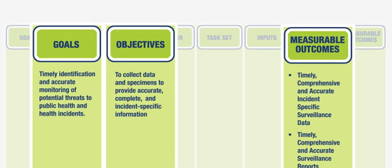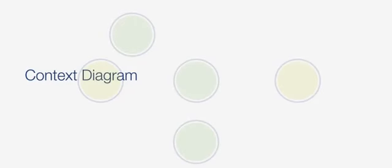Now that we have created the bookends of the process in our matrix, we will turn to the context diagram to help us understand the environment in which the work is performed.